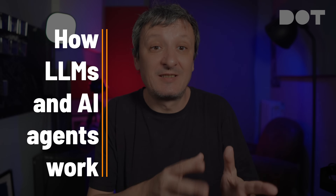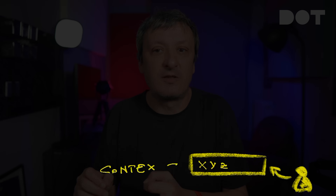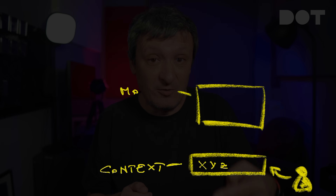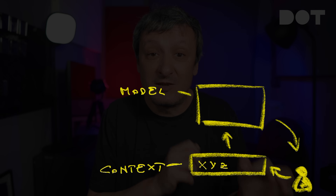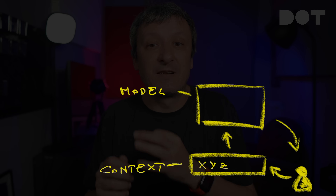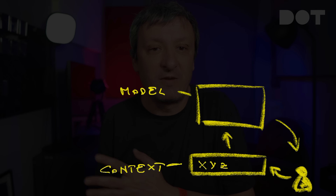To understand model context protocol or MCP, we need to understand how LLMs or models and AI agents work. If we focus on LLM prompts, whatever we type is a context. When that context is sent to a model, it responds to the best of its abilities, and the more we describe what we want, the better the model will respond to our requests. That is the same as with humans — if I ask you whether we should use Kubernetes, you might give me a simple answer like yes, no, or more likely, it depends.